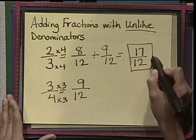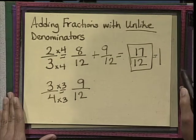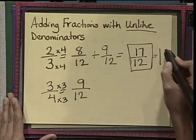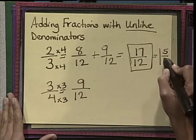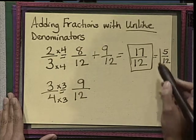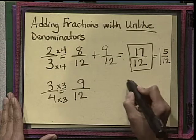If not, you can quickly change it into a mixed number. 12 goes into 17 one whole time, and 5 is left over, and then 12 is the denominator which stays the same.